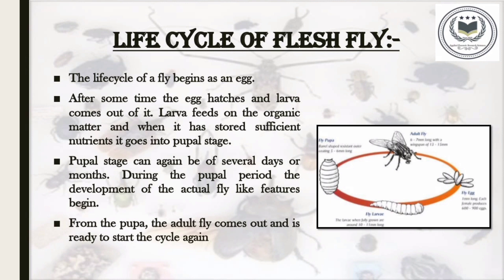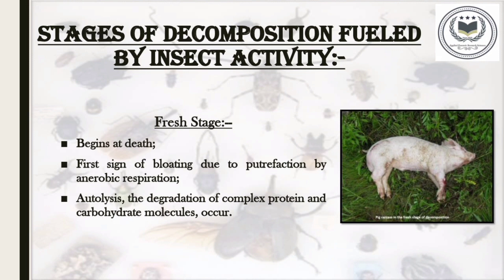If a season is hot and humid, more generations may occur than during a cool season. Let us focus on the stages of decomposition fuelled by insect activity. There are five stages: fresh, bloat, decay, post decay, and dry or skeletal. The first is the fresh stage. It begins at the time of death when flesh flies, blow flies, and predatory wasps attack the dead body. It is the first sign of bloating due to putrefaction by anaerobic bacteria. There is also a process called autolysis — the degradation of complex protein and carbohydrate molecules — which occurs at this stage.